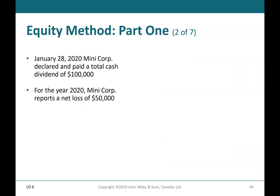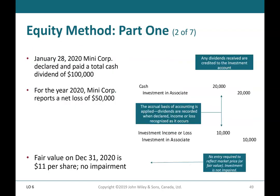Equity Method Part 1 (2 of 7): On January 28, 2020, Mini Corp declared and paid a total cash dividend of $100,000. Our 20% share is $20,000: debit cash $20,000, credit investment in associate $20,000. For 2020, Mini Corp reports a net loss of $50,000; equity pickup: debit investment income or loss $10,000, credit investment in associate $10,000. Fair value on December 31, 2020 is $11 per share — no impairment, so no journal entry is required.